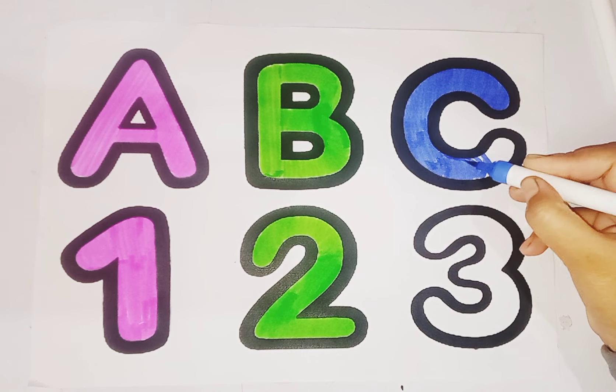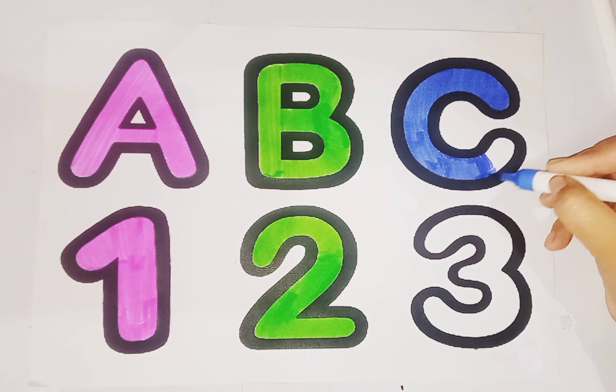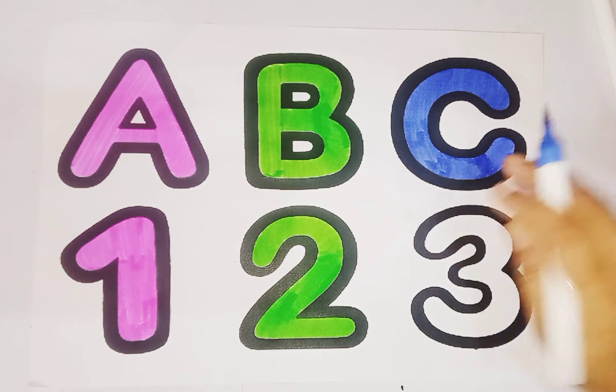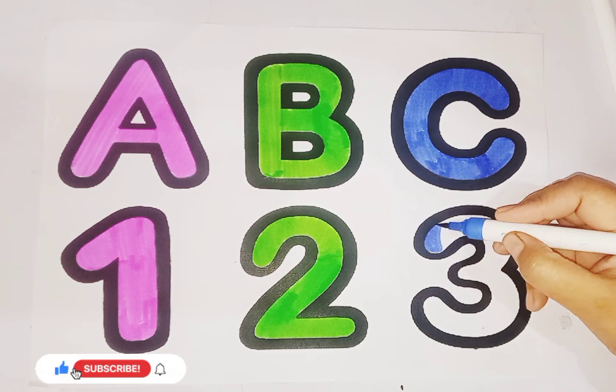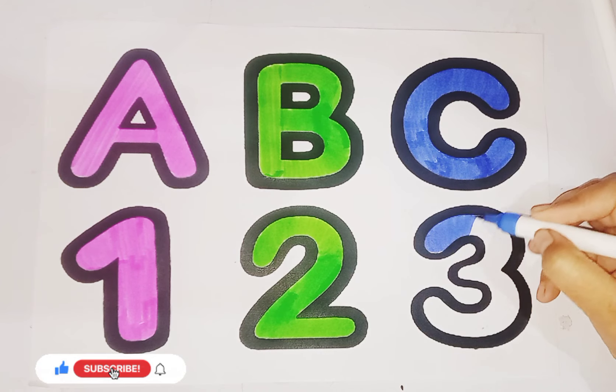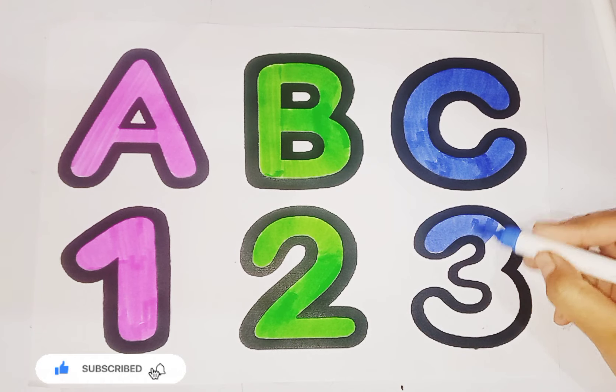Let us see, C is for Cat, and this is number 3, T, H, R, double E, 3.